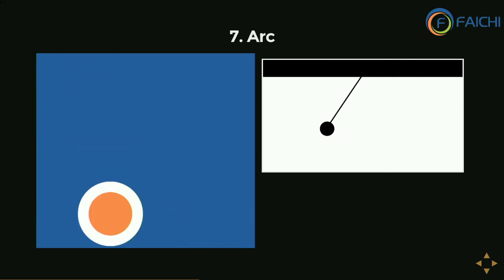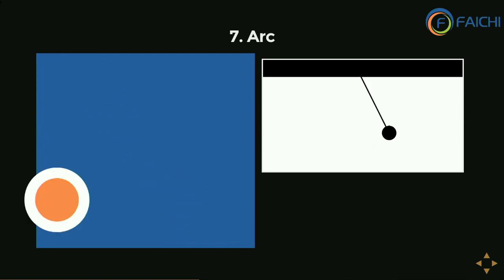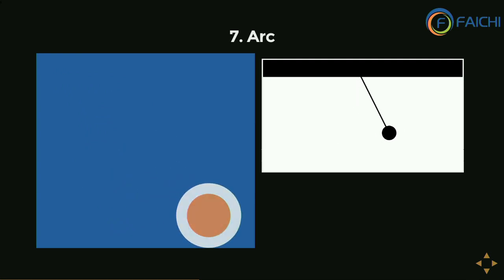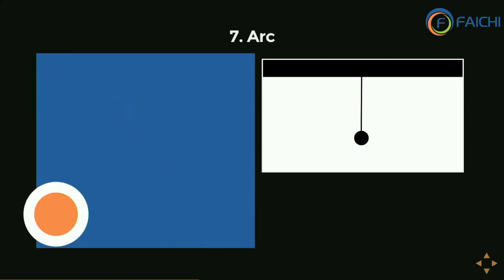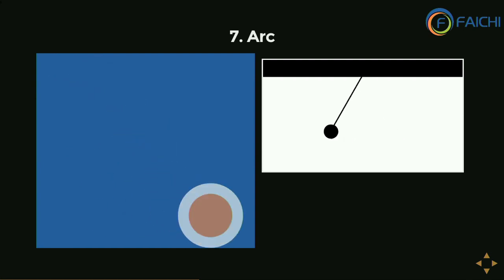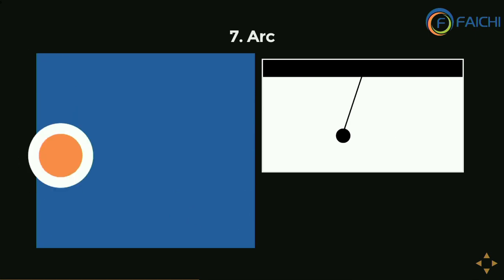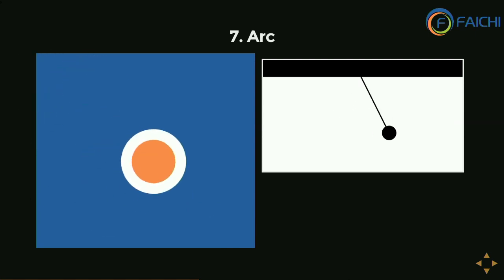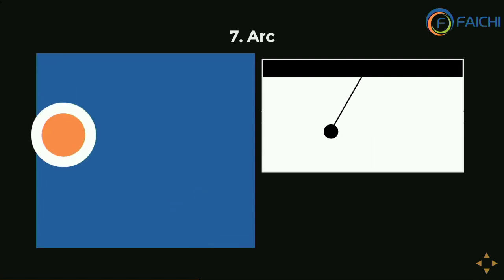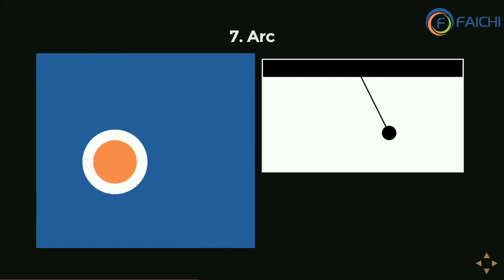The arc principle — when a ball falls from a table, it never returns to its original height. After falling, it moves forward and creates a virtual path in an arc shape. The same principle applies to a pendulum. To achieve this in CSS, we need to keep two things in mind: the ball is moving in two directions — up and down, and sideways. By combining these two movements, we can achieve this principle.